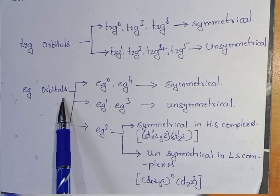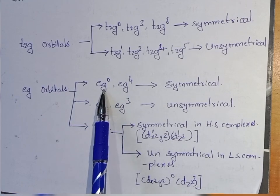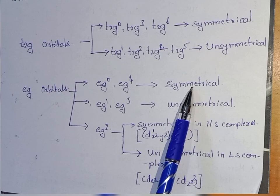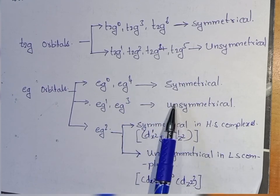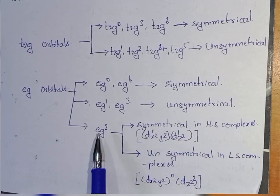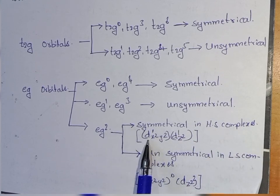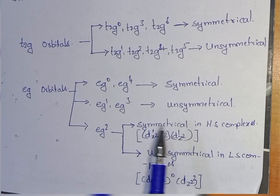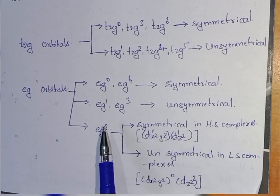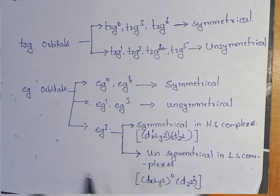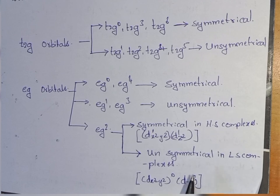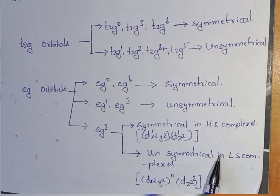Coming to the EG set of orbitals: EG0 and EG4 are symmetrical configurations. EG1 and EG3 are unsymmetrical configurations. In case of EG2, it is symmetrical in high spin complexes because these two electrons will be distributed into two orbitals uniformly — one electron in the dx²-y² orbital and one electron in the dz² orbital. But in low spin complexes, these two electrons will go into any one of the orbitals, meaning a non-uniform arrangement of electrons takes place, so it is called an unsymmetrical electronic configuration.